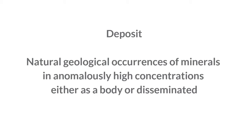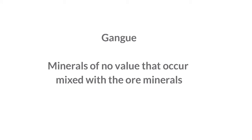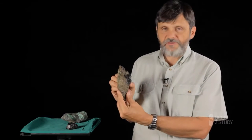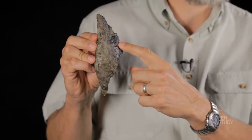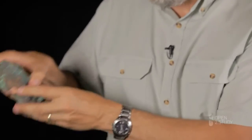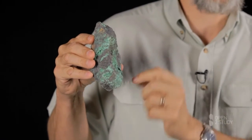Now let's define a deposit. In defining a deposit, we need to realise that there are background traces of every element in all geologic materials. So a mineral deposit is a natural geological occurrence of minerals in anomalously high concentrations, either as a body or disseminated. An ore is a mineral that can be mined and from which a commodity of value can be extracted. Gang are minerals of no value that occur mixed with the ore minerals. To illustrate the ideas of ore and gang, let's consider these specimens: in the first specimen we have a gold-coloured ore of copper called chalcopyrite associated with a black gang rock. In the second specimen we have another ore of copper, a green mineral called malachite, in this case associated with a grey gang mineral.